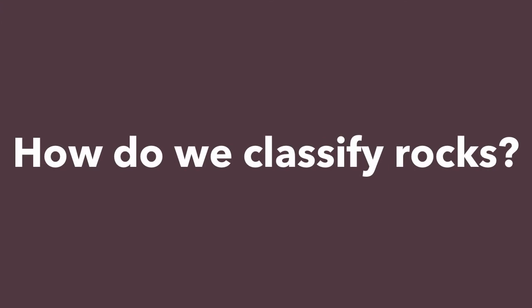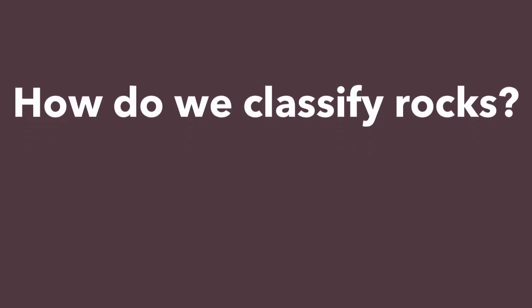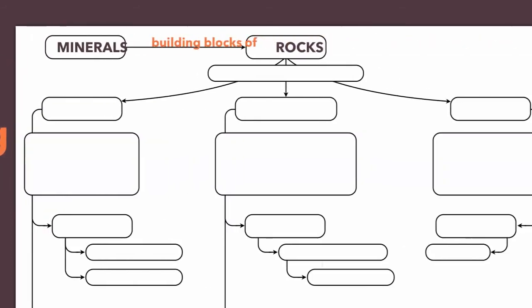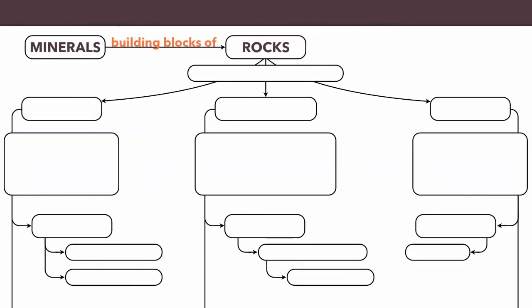Do we group them by their color, their texture, their density? It turns out that the best way to classify rocks is based on how they form — the way in which they come to be. So on our sheet, under the word rocks, we write that they're classified based on their method of formation, or simply how they form.